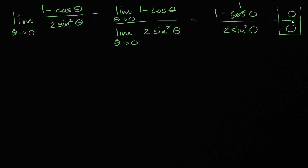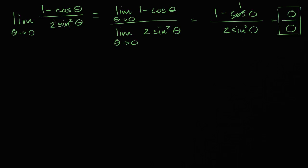So once again we have that indeterminate form. When you have zero over zero, it doesn't mean to give up — it doesn't mean that the limit doesn't exist. It just means maybe there are some other approaches to work on. If you got some non-zero number divided by zero, then you'd say that limit doesn't exist. But let's see what we can do to think about this expression in a different way.